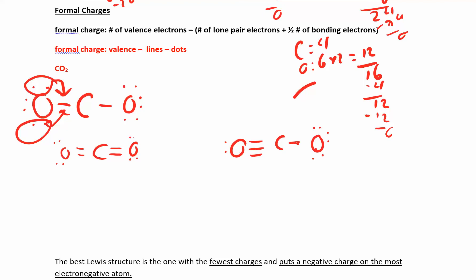You may look at that and say of course the first one is right — it's symmetric and looks better — but we need to quantify why. We can calculate something called formal charge for each atom. Formal charge equals the number of valence electrons minus the number of lone pair electrons minus half the number of bonding electrons. Simply put: formal charge equals valence electrons minus the number of lines minus the number of dots around that atom.